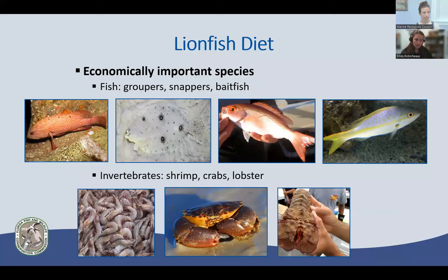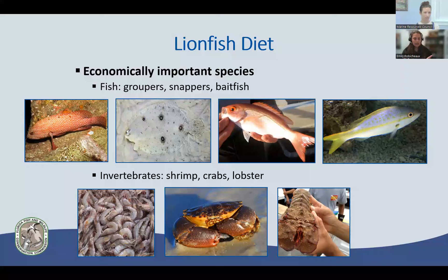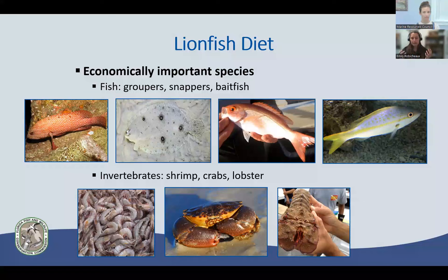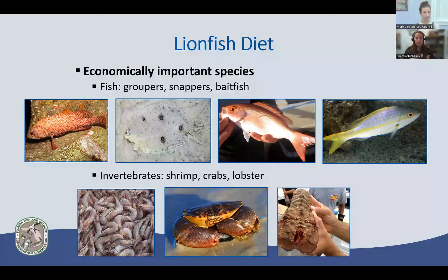Lionfish typically prey on juvenile fish from economically important species — grouper, flounder, snapper, shrimp, crab, and lobster. This is really negative because preying on juvenile species takes a large chunk out of the population that never gets to reach maturity. Those individuals never get to spawn and never contribute to population growth, stunting population recovery. It also significantly impacts fisheries health — when these are directly important species to us, we're harvesting these fish and lionfish are eating them too, creating more impact to each population than would have happened before lionfish were introduced.